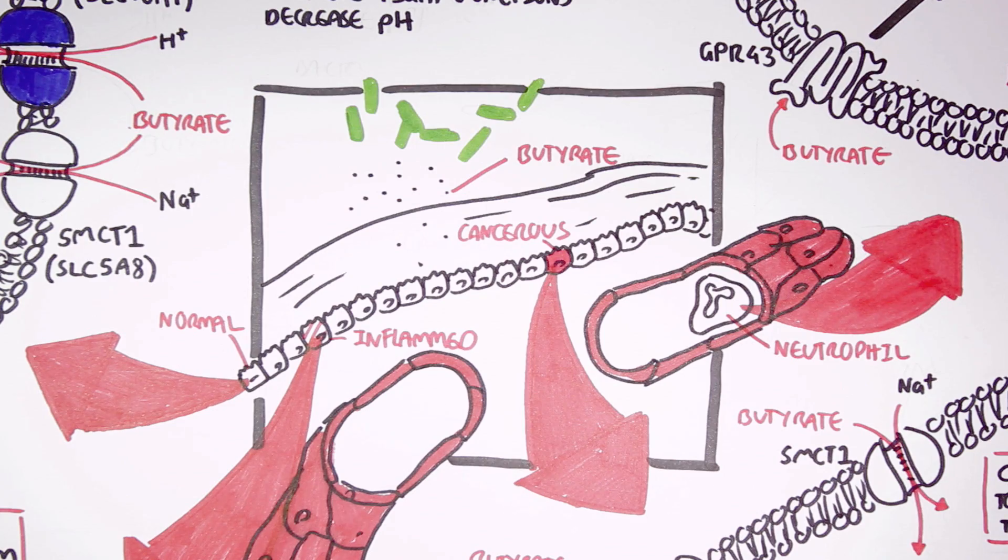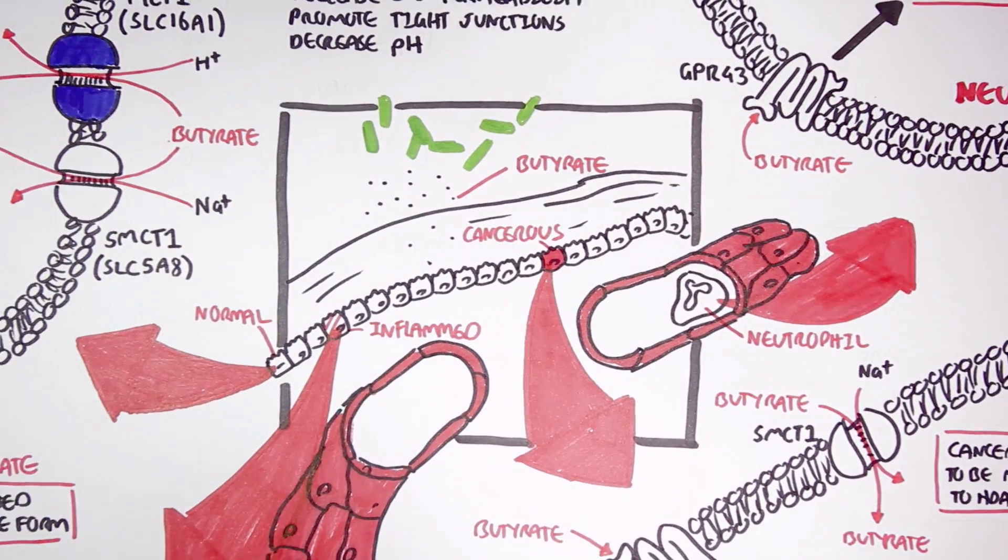By recruiting more immune cells to the area, for example, the neutrophils are able to remove unwanted substances or bacteria from the mucosal system.